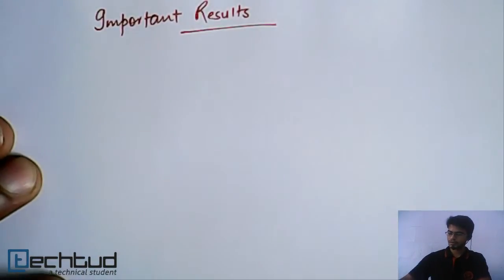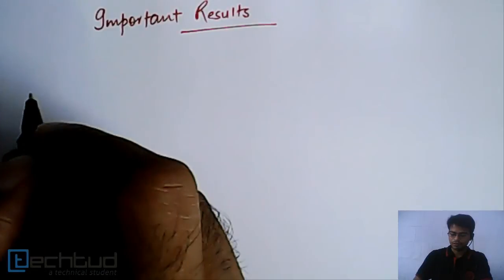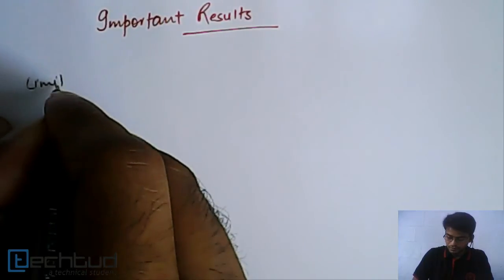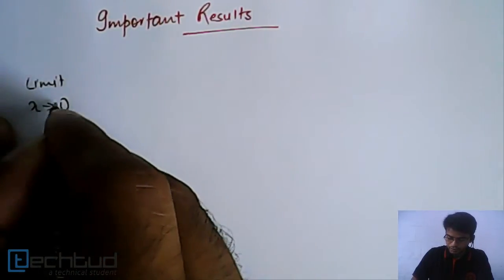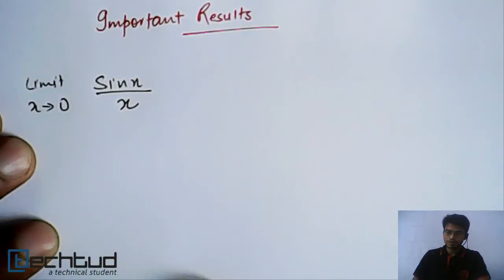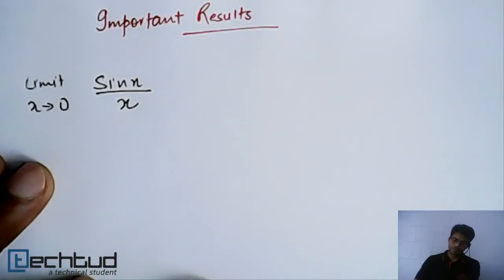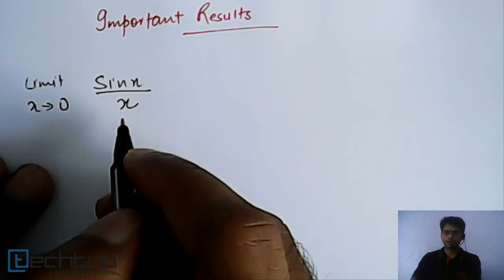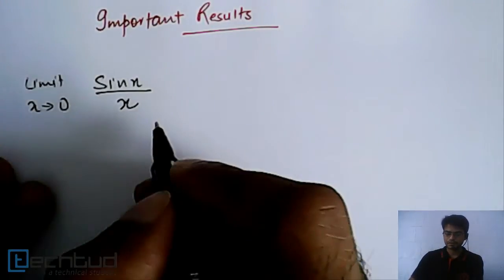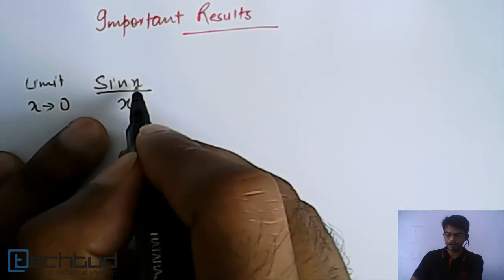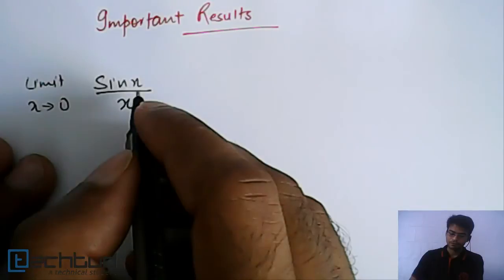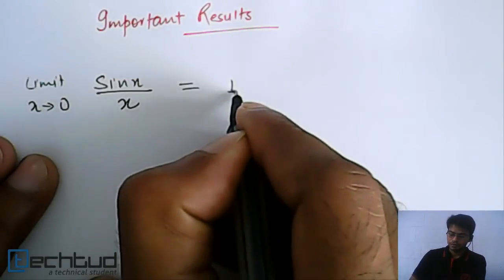Most of these results you already know, but for the sake of completion I'll revise them. The first one is: limit as x tends to zero of sin(x)/x. If you put x = 0, you get zero over zero — an indeterminate form. We will discuss indeterminate forms in detail in the next lecture, but the value of this limit is equal to 1.